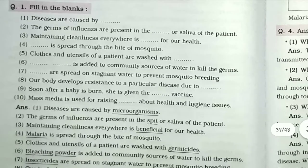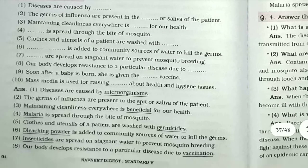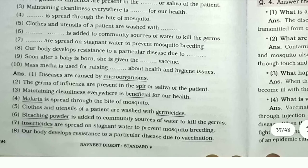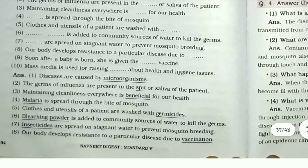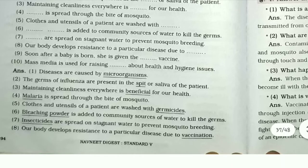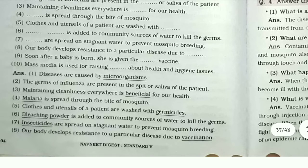Fill in the blanks. Diseases are caused by microorganisms. The germs of influenza are present in the saliva of the patient. Maintaining cleanliness everywhere is beneficial for our health. Malaria is spread through the bite of a mosquito. Clothes and utensils of a patient are washed with germicides. Bleaching powder is added to community water sources to kill germs. Insecticides are spread on stagnant water to prevent mosquito breeding. Our body develops resistance to a particular disease due to vaccination.